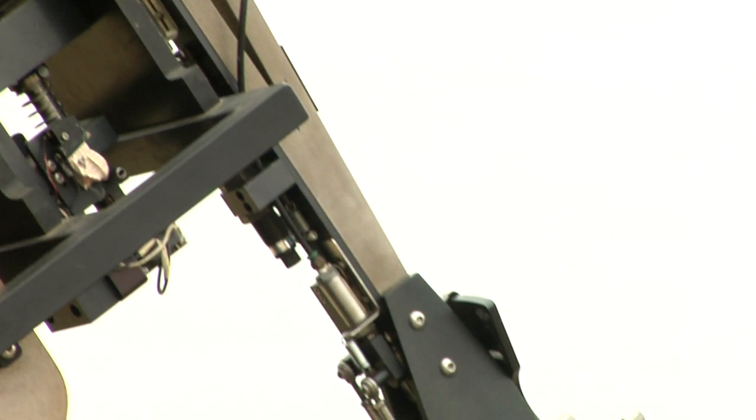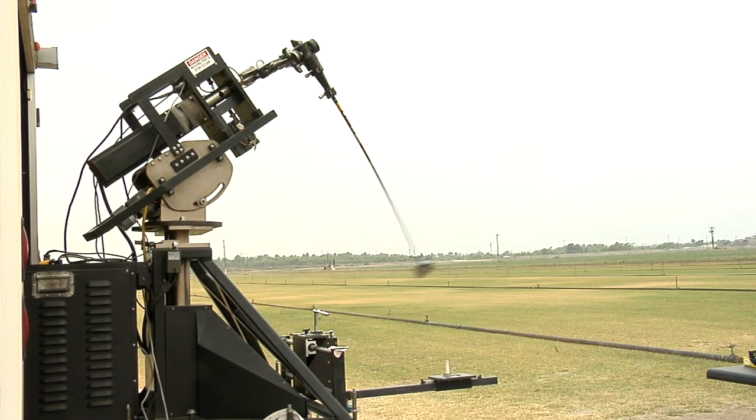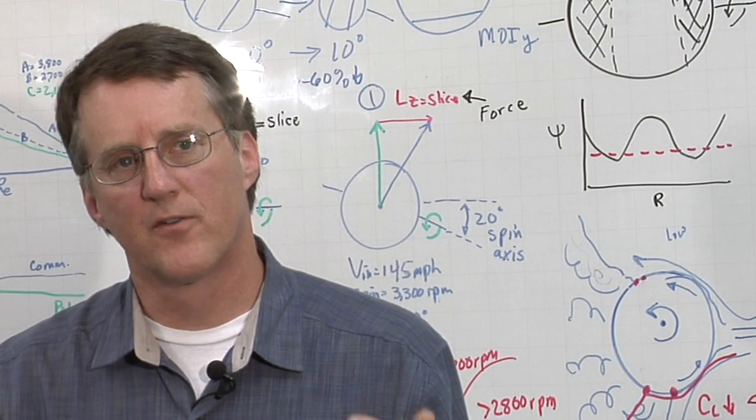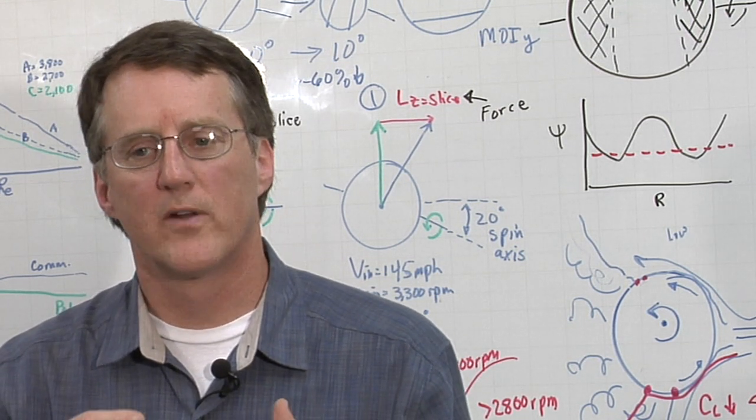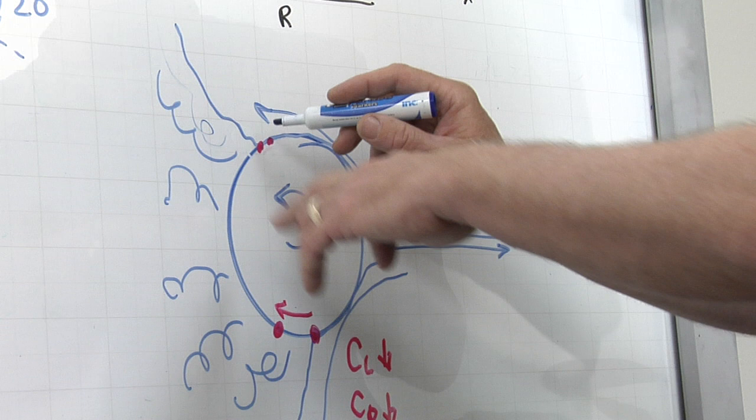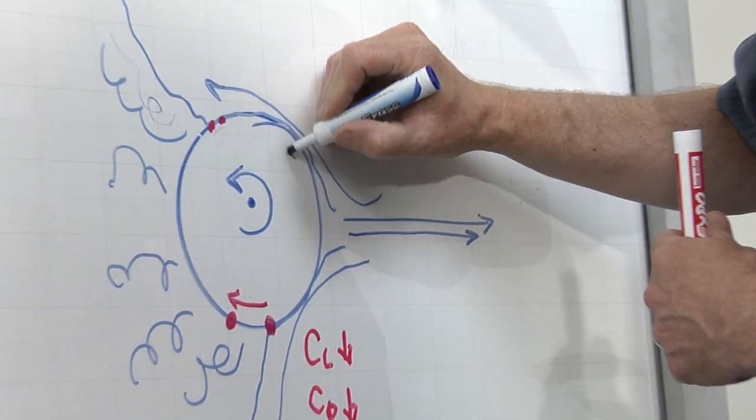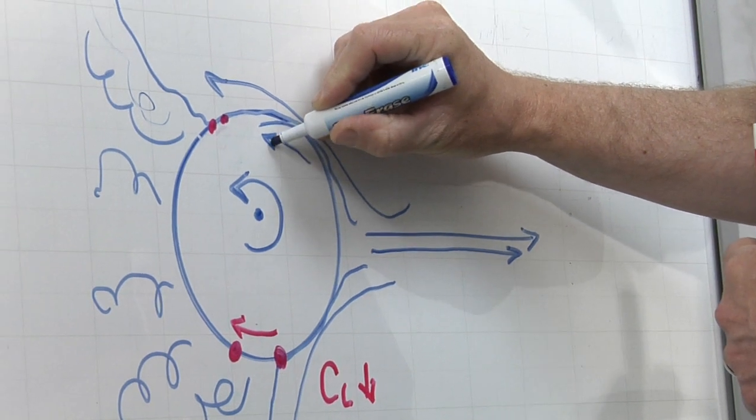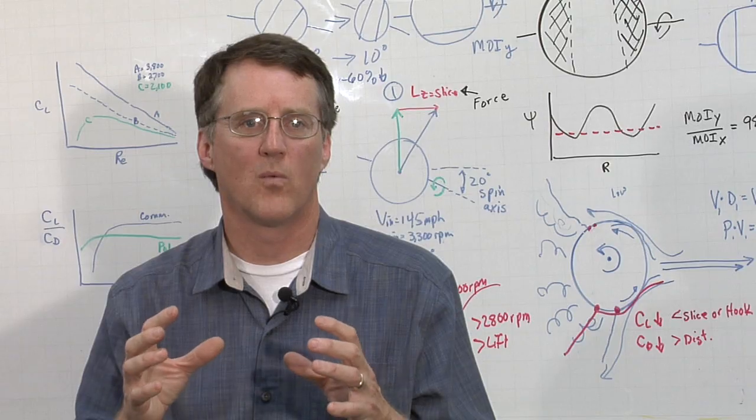We used the Golf Labs robot so that we could hit the golf ball in a very reproducible fashion. That way we can test different dimple patterns under the same flight conditions. And what we're interested in finding out is how much force does the ball generate in the direction of a slice as we vary the speed and the spin of the golf ball. By understanding that, you really understand one of the keys to why this ball works.